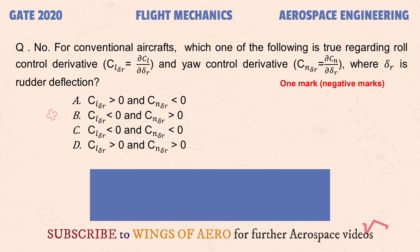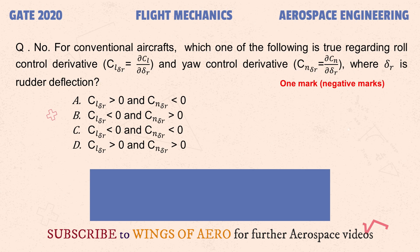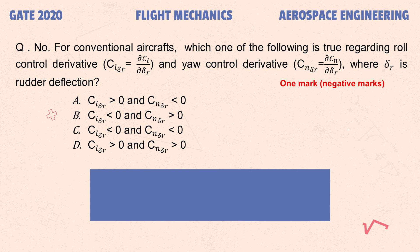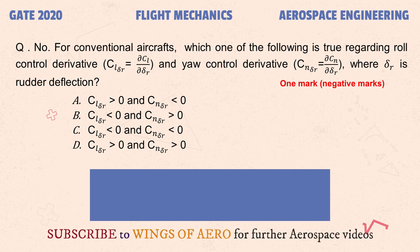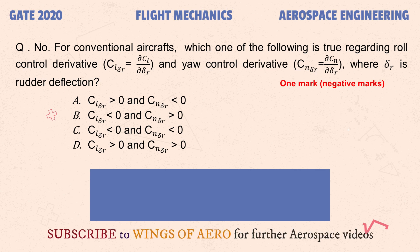First question: for conventional airplanes, which one of the following is true regarding the roll control derivative and yaw control derivative, where delta_r is rudder deflection? Option A: roll control derivative greater than zero, yaw control derivative less than zero. Option B: roll control derivative less than zero, yaw control derivative greater than zero. Option C: both less than zero. Option D: both greater than zero.